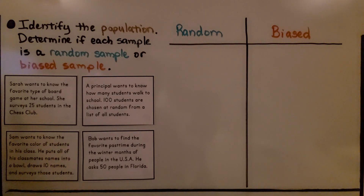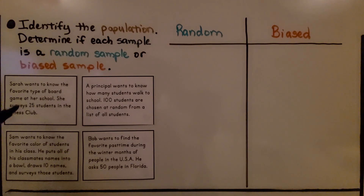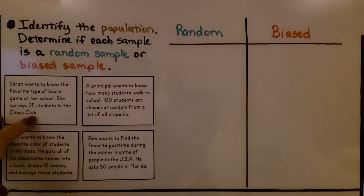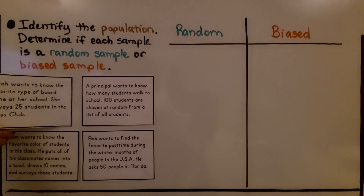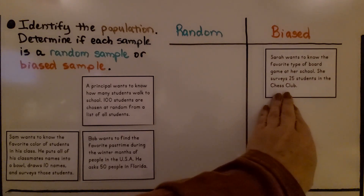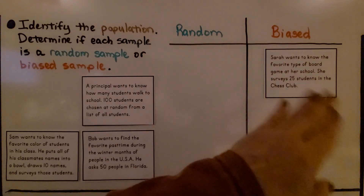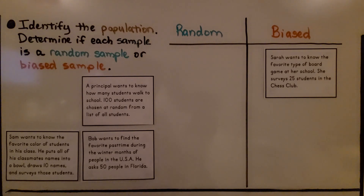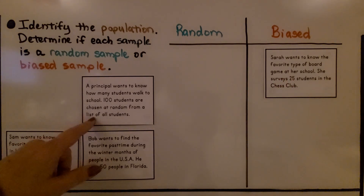The first one says: Sarah wants to know the favorite type of board game at her school. She surveys 25 students in the chess club. Would that represent all the students in her school? Just 25 students in the chess club? No, it wouldn't. That's a very select group of people — just people in the chess club. So this would be biased. She's not picking people randomly; she's only picking people in the chess club.